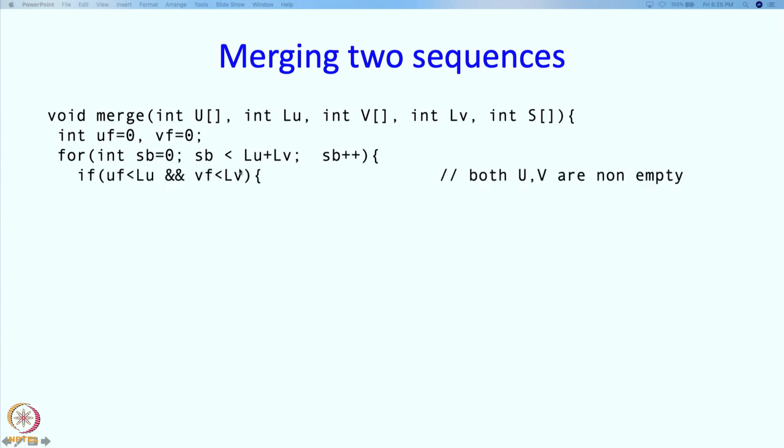So how do we do this movement? Well if both U and V are non-empty, and when will they be non-empty? If UF is smaller than LU so the front is still pointing to a valid element in U, and if the front is pointing to a valid element in V, then that means both U and V are non-empty. In which case what should we do?